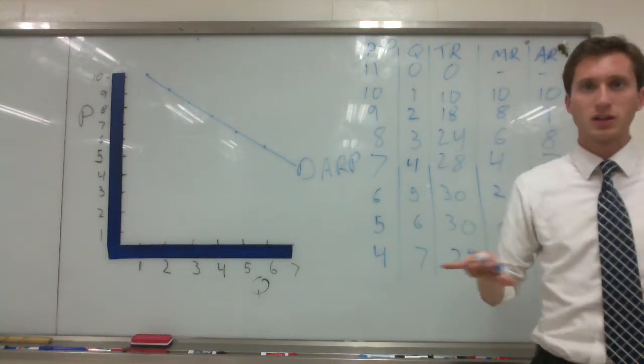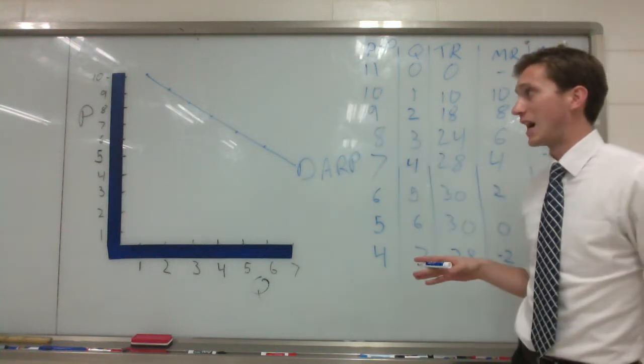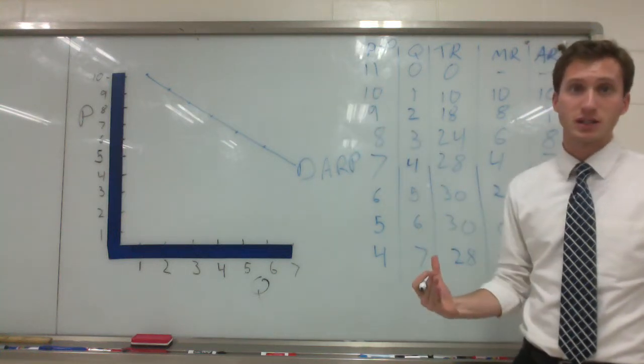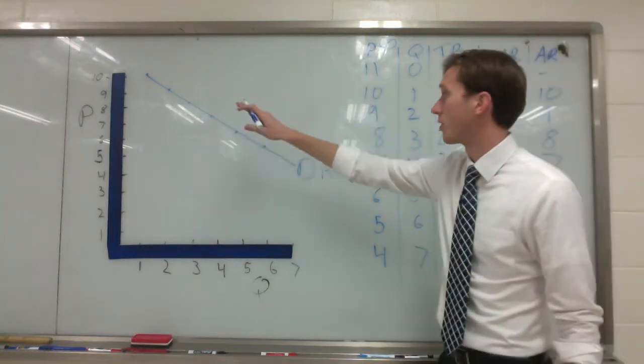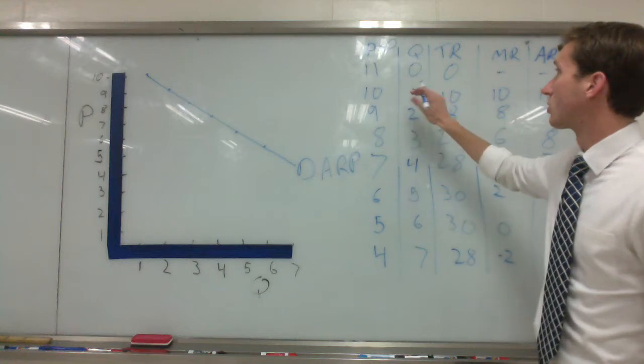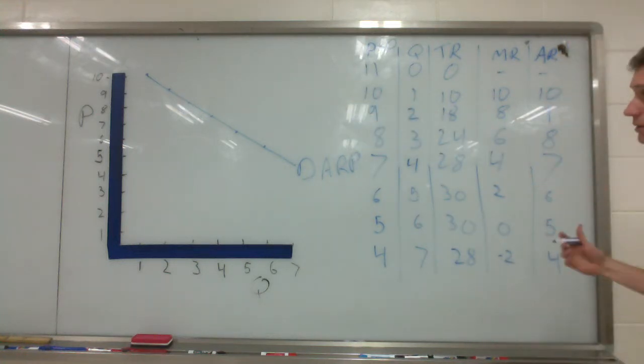Now before Mr. DART was all one line, perfect competition, because it was perfectly flat. Now we have a downward sloping, so our marginal revenue is going to be a little bit different. So bear with me, here's our points on our graph based upon our quantity and our price and our demand curve there. Now marginal revenue is going to be a little bit different.